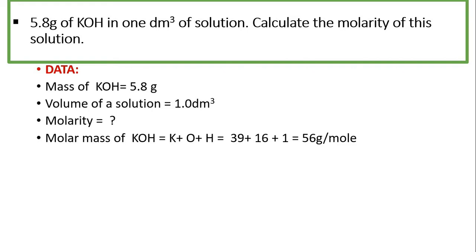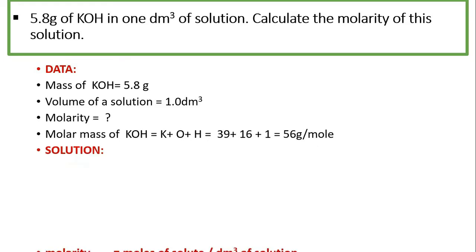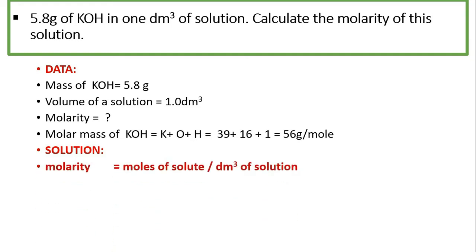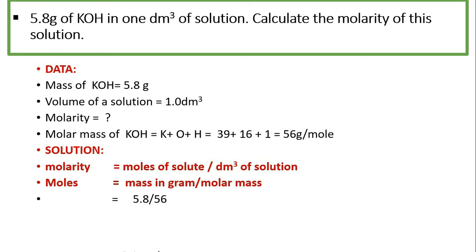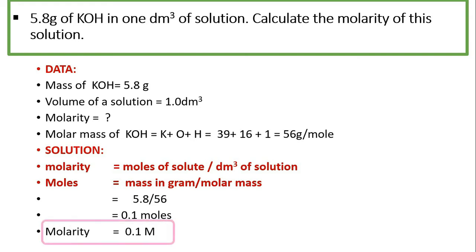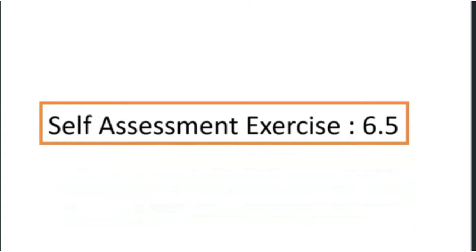Data: mass of KOH is 5.8 g, volume of solution is 1.0 dm³, and the molar mass of potassium hydroxide is 56 g/mol. Molarity equals moles of solute divided by dm³ of solution. We don't have number of moles, so first we apply: moles = mass in gram divided by molar mass = 5.8 divided by 56 = 0.1 moles. Since volume is 1 dm³, molarity equals 0.1 M.